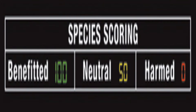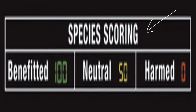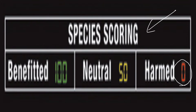As we go through this, we're going to use a species scoring matrix. If the organism gets a score of 100, it is benefited. If the organism gets a score of 50, it's neither benefited nor harmed — it's neutral. And if it gets a zero, it's being harmed.